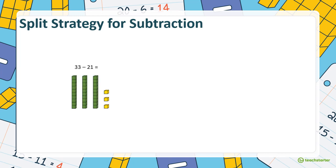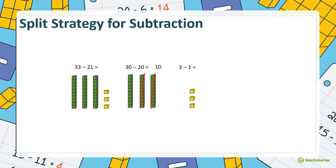Let's use hands-on tools to solve 33 minus 21. We've got three tens and three ones to make 33, and then we need to take 21 away. With hands-on tools we can do it in the steps of the split strategy — 30 minus 20, taking away the tens first, leaves 10. Then 3 minus 1 equals 2. We add them together: 10 plus 2 equals 12.